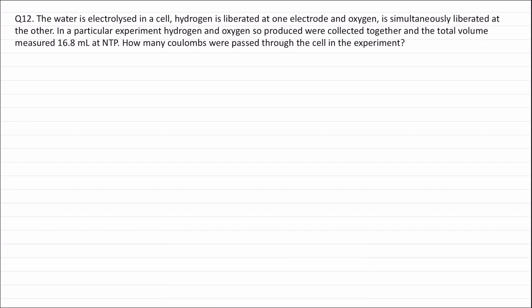Question 12. The water is electrolyzed in a cell. Hydrogen is liberated at one electrode and oxygen is simultaneously liberated at the other. In a particular experiment, hydrogen and oxygen produced were collected together and the total volume measured 16.8 mL at NTP. How many coulombs were passed through the cell in the experiment?